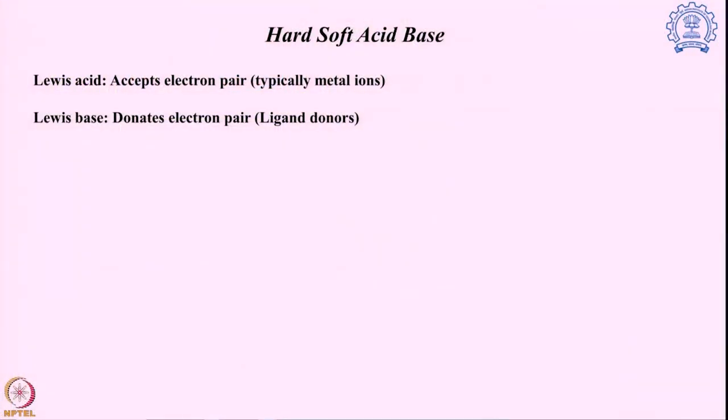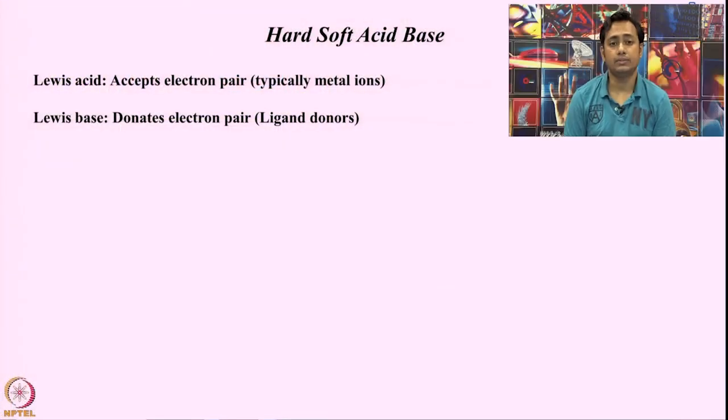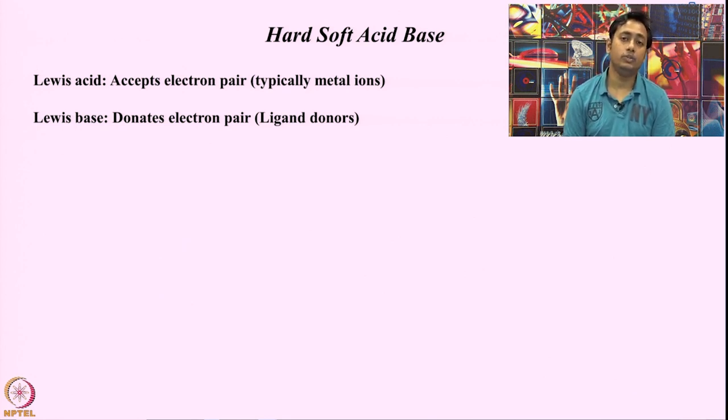Now we take another look at how we can alternatively discuss acid-base properties. Another way to define acid and base is with respect to electron pair donation, which is much more generalized. If there is a system which can accept an electron pair, that is known as the Lewis acid — generally metal ions. And the entity which is supplying this electron pair is known as the Lewis base — generally ligand donors. So this is the definition with respect to Lewis acid-base theory: a system that can accept an electron pair is an acid, and a system which can donate an electron pair is the base.